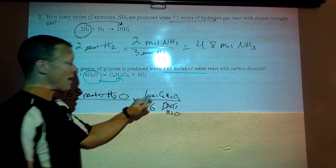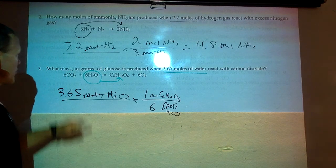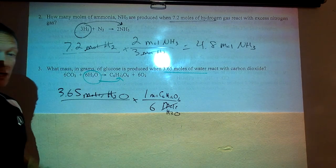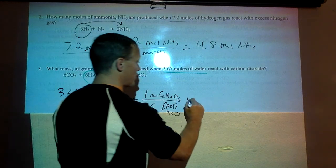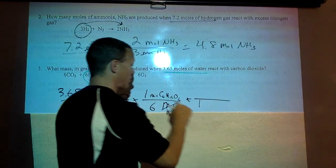Moles cancel. So if we stop right now we're at moles of glucose. But the problem asks us for grams of glucose. So we need to turn moles of glucose into grams. This is moles of glucose. So put moles of glucose down here.